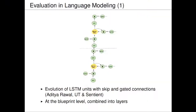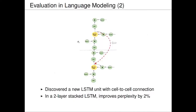Here's another study with results from yesterday. Aditya Raval, who is here at this conference, evolved LSTM units — the architecture of how to connect units together — then a Blueprint builds layers. With evolution he discovered that it's a good idea to have a particular kind of connection: connecting two memory cells together. This already gave an improvement of 2% in the language modeling task in perplexity.